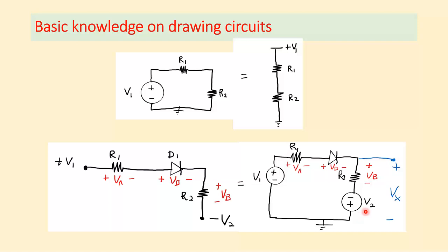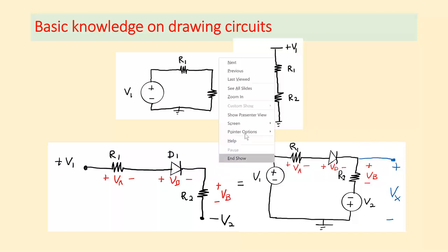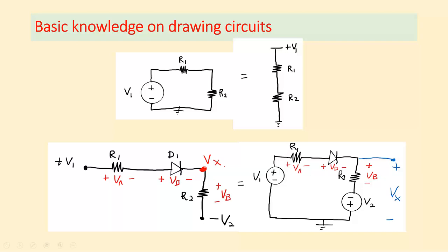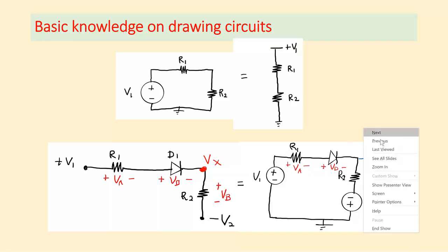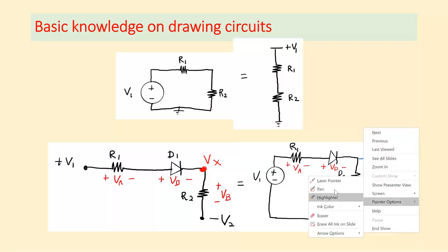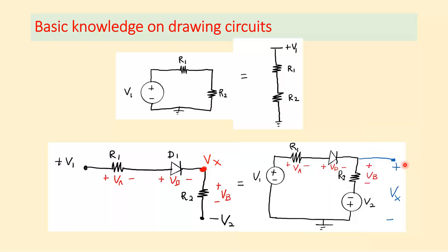If there is a node labeled Vx somewhere in the circuit, it means that point has a voltage of Vx with respect to ground. These two circuit representations are the same — just drawn differently.